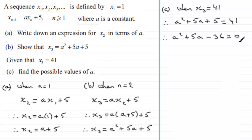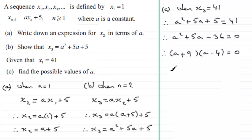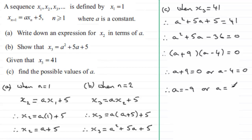We can solve this by factorising. The quadratic factorises as (a plus 9)(a minus 4) equals 0, since 9 times minus 4 is minus 36 and 9a minus 4a gives 5a. Setting each factor equal to zero: a plus 9 equals 0 gives a equals minus 9, and a minus 4 equals 0 gives a equals 4. So the possible values of a are minus 9 or 4.